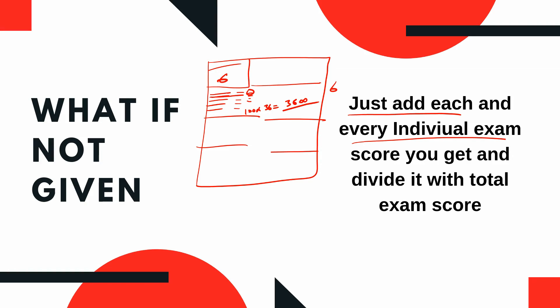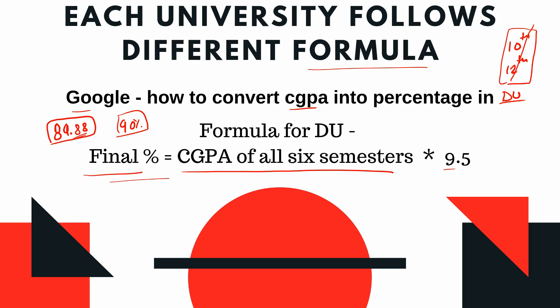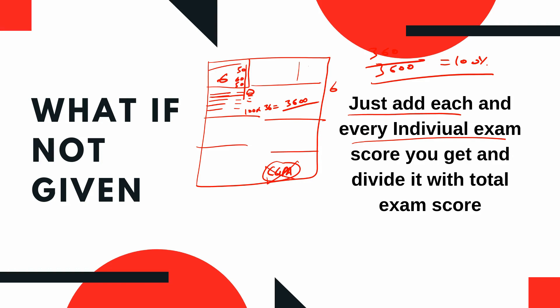So let's say you have marks like 50, 60, 50, and so on. If the total is out of 3600 and you scored 3600, that would be 100% — but that would obviously be wrong as an example. You should either use the formula provided by your institution, or if no formula is given, use the direct marks calculation. Make sure to be precise — for example, if it's 99.81, write 99.81, not 99.80.